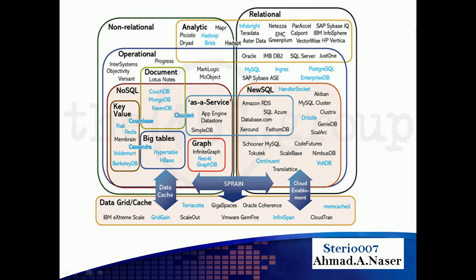These are all called NoSQL databases — MongoDB, Cassandra, and Neo4j are all examples of NoSQL databases.